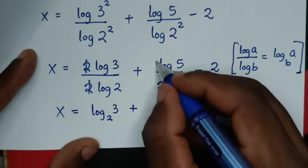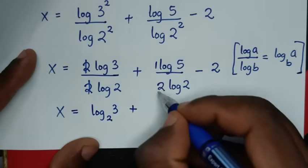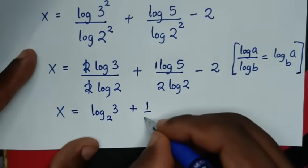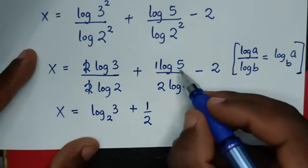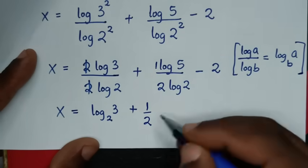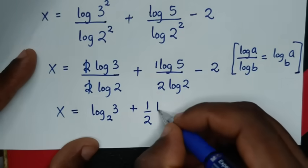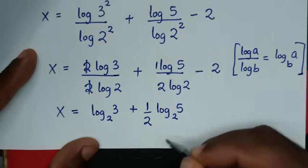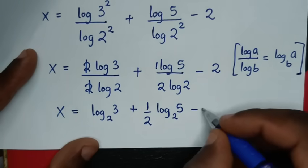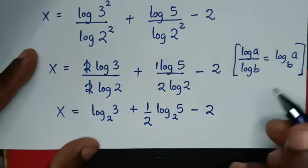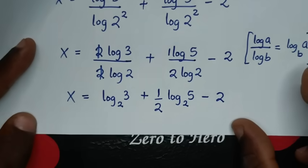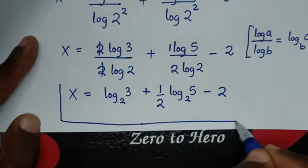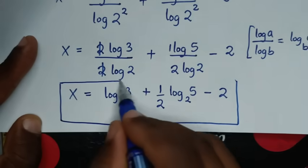And log of 5 over log of 2 — here the coefficient is 1 over 2, so it will be 1 over 2 times log of 5 base 2, minus 2. So this is the final answer for the value of x in our problem.